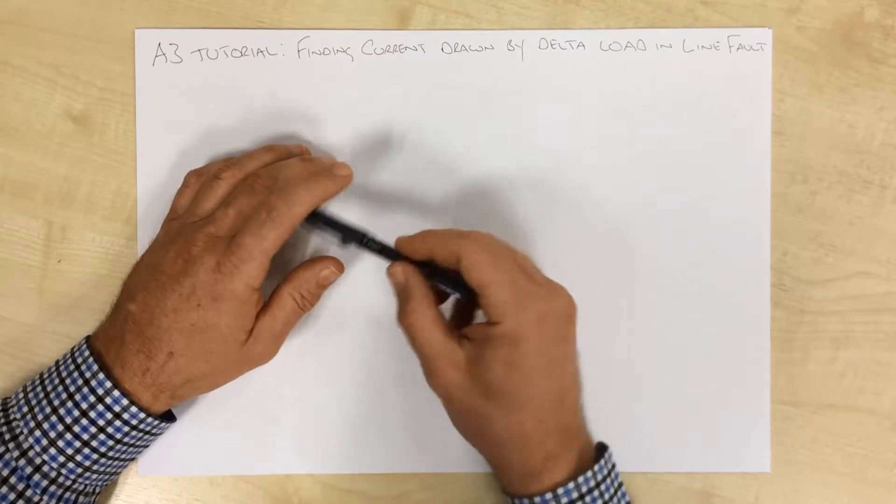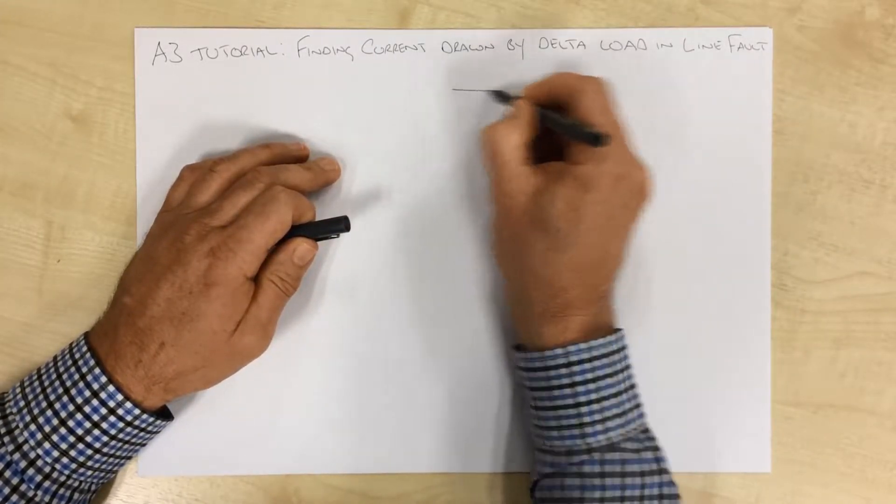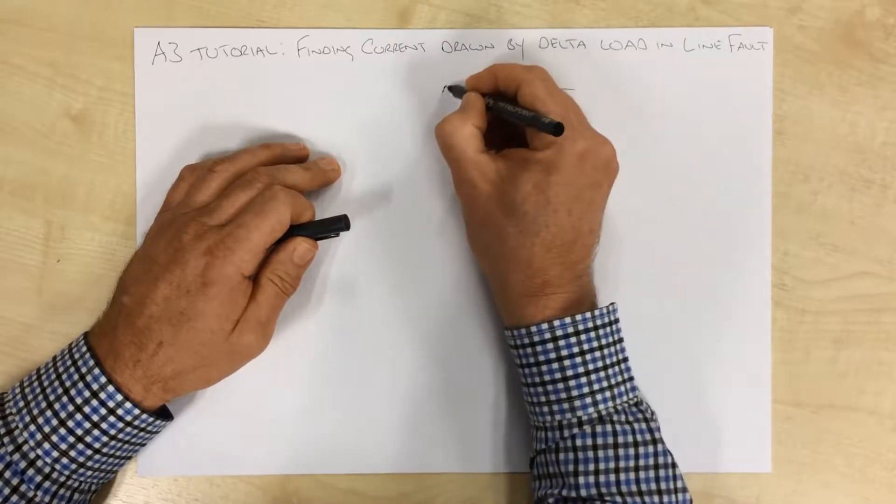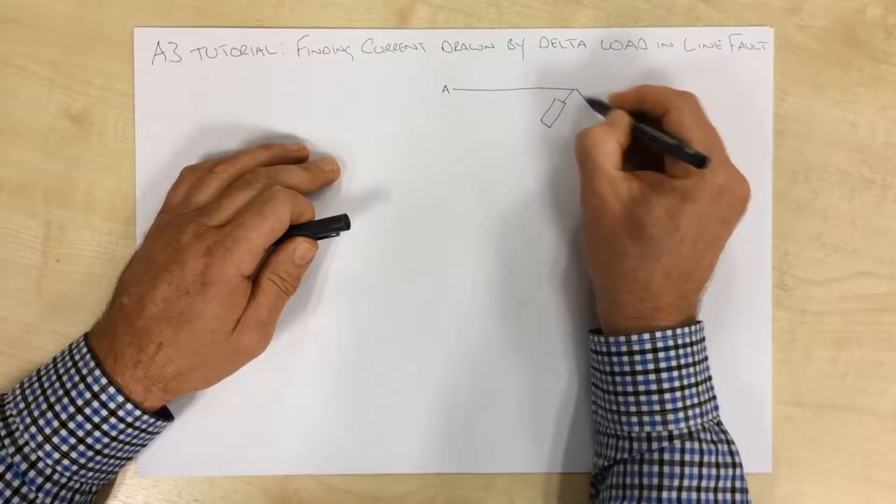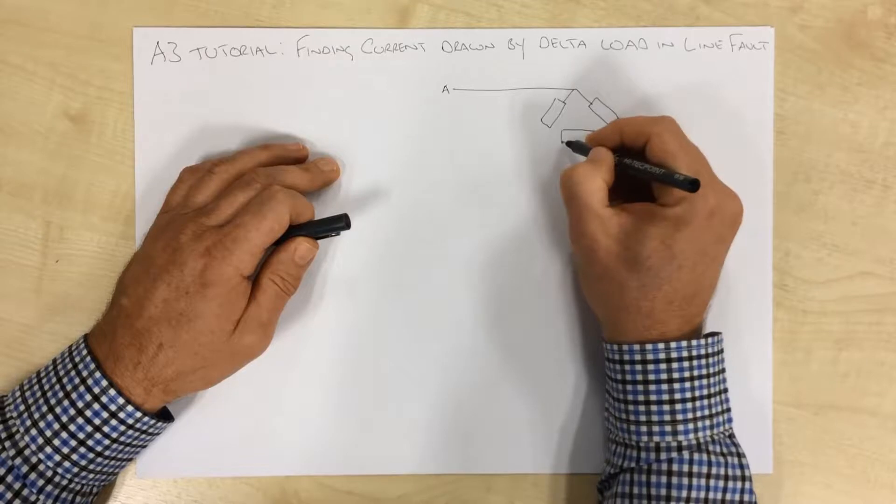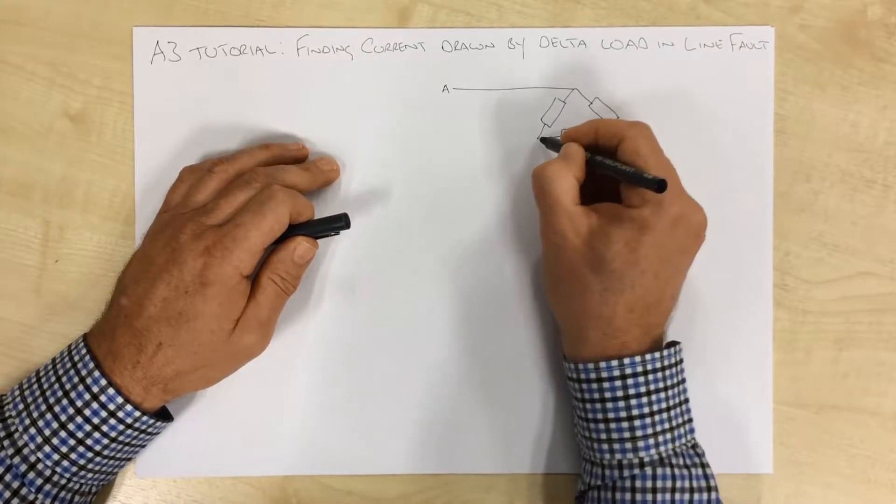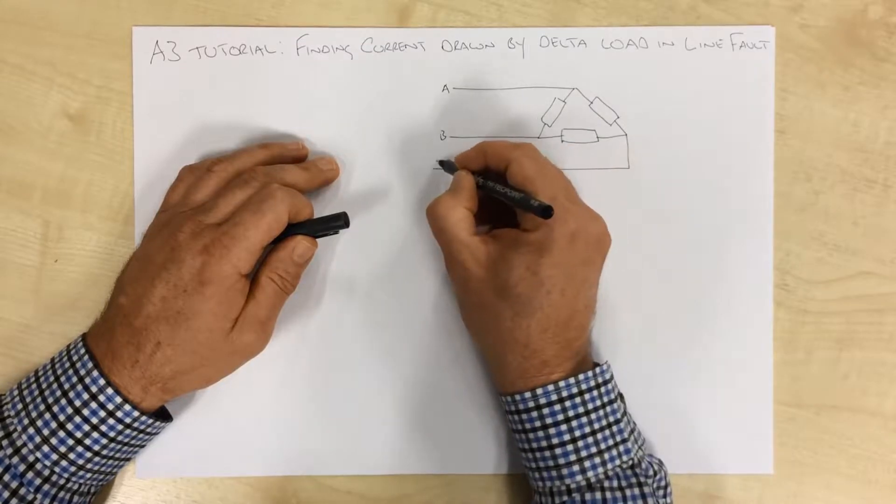So first of all, let's refresh the delta load that we're going to talk about. Here's a line here, we'll call this line A. We've got a load here, a load here. We'll call this line B, and we'll call this line C.